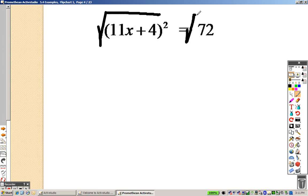So I square root the entire thing here to get 11x plus 4 equals, because we square rooted an item, it's now plus or minus, and I have the square root of 72.